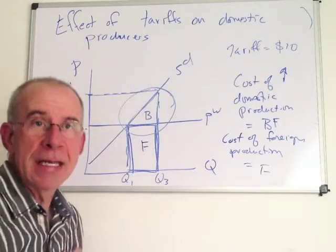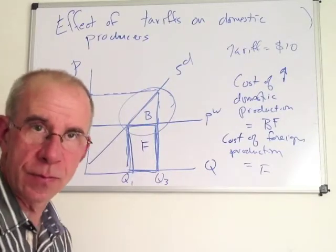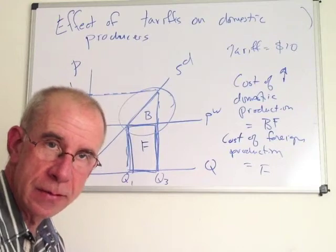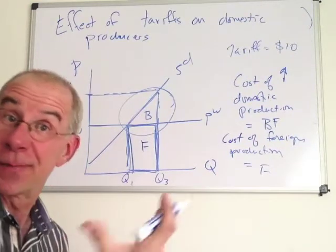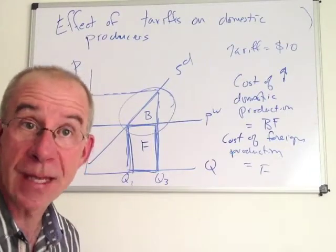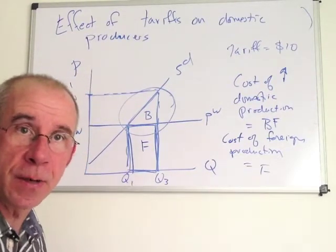So B is that deadweight loss that we've talked about before. That is the increased cost of getting this product from a domestic source instead of a foreign source. That's the cost of inefficient domestic production.